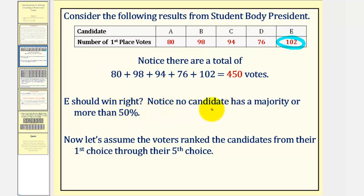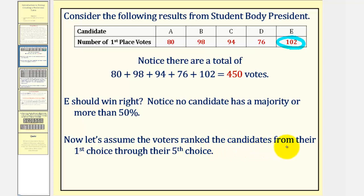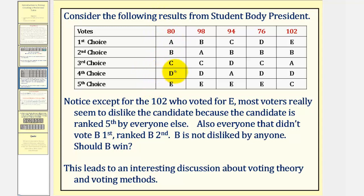Well, notice that in order to have a majority of more than 50 percent, somebody would have to have more than 225 votes. And notice that no candidate here even comes close to having a majority of the votes. Now let's assume that the voters rank the candidates from their first choice through their fifth choice. Here are the results, and this is called a preference table, which we'll define in just a moment.